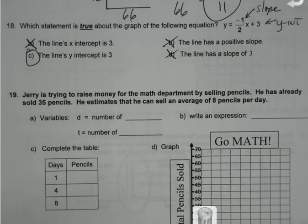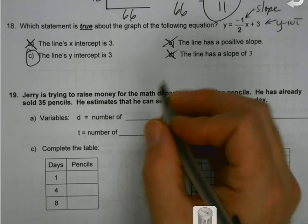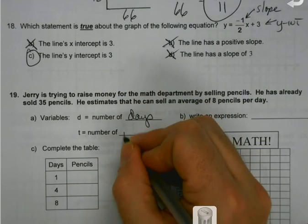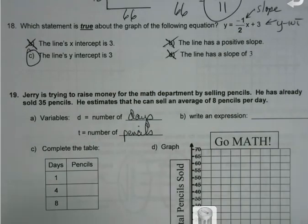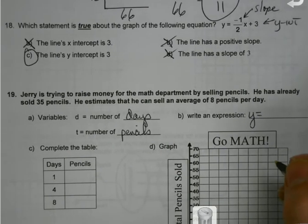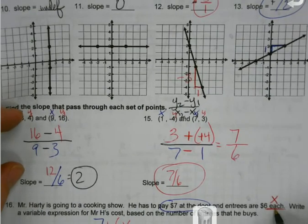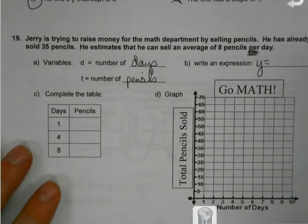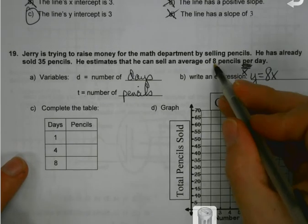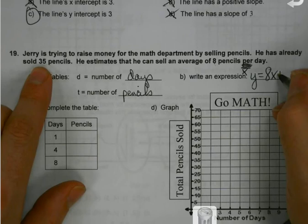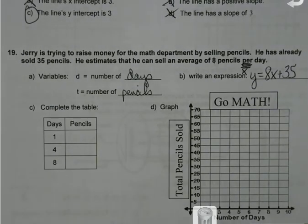Jerry's trying to raise money for the math department by selling pencils. He's already sold 35, and he estimates he can sell an average of 8 pencils per day. My D is my number of days, T is the total number of pencils. When I see the word 'per,' that means there's an x involved — so 8x, because it's 8 pencils per day. But I had a head start: I've already sold 35. So that would be my expression: 8x plus 35.